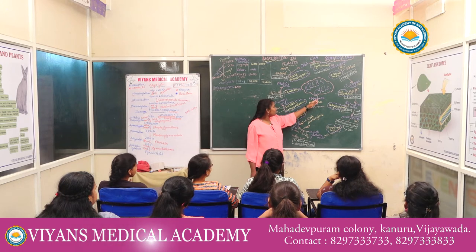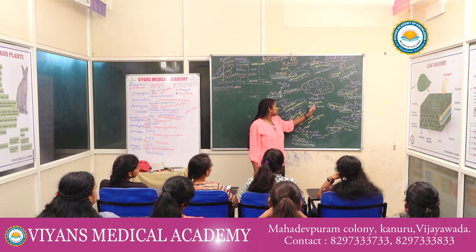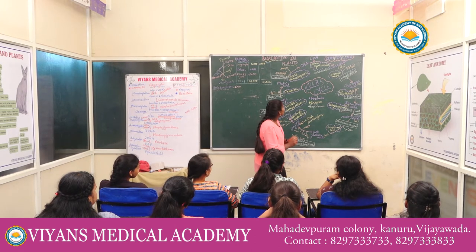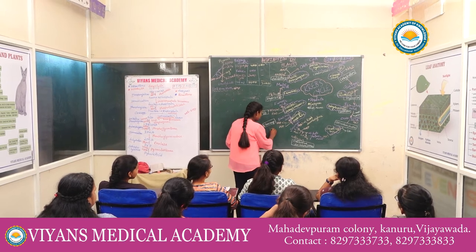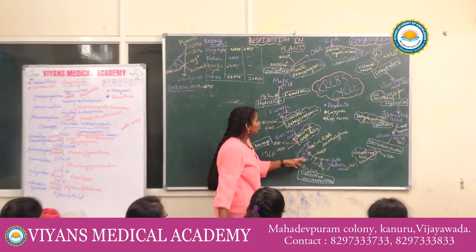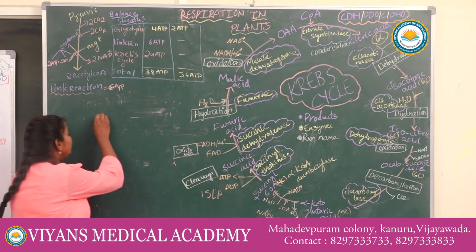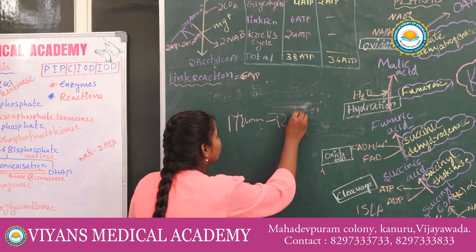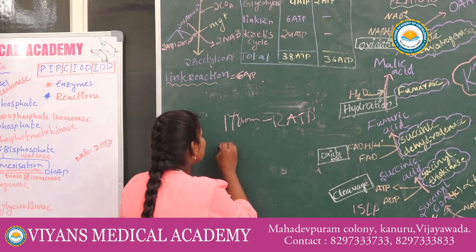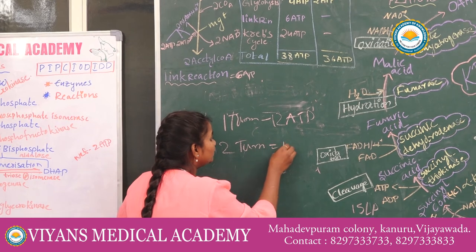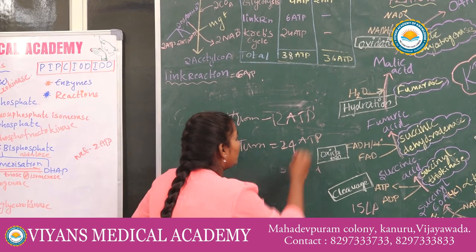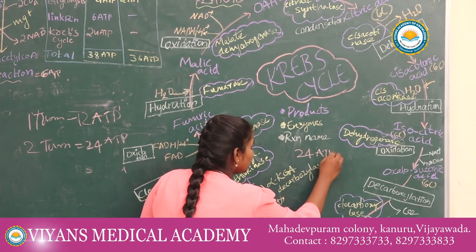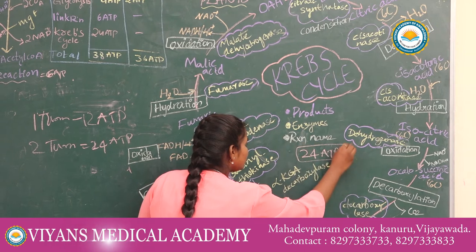Products are shown in pink, enzymes in yellow, and reaction names in green. The important point here is there is one substrate-level phosphorylation (SLP) per turn of the cycle. The Krebs cycle runs 2 turns per glucose molecule. Each turn produces 12 ATP, so 2 turns yield 24 ATP total from the Krebs cycle.